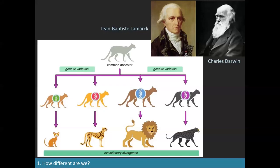We can speak of sub-species or races — in botany they are called varieties, but the concept is the same. These are groups of individuals of the same species who are going to become different species but have not completed the process. You can understand that a concept like this is rather difficult to define in practice.